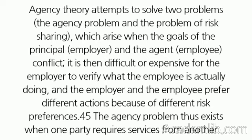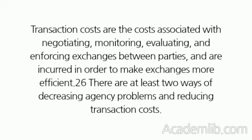Agency theory attempts to solve two problems: the agency problem and the problem of risk sharing, which arise when the goals of the principal (employer) and the agent (employee) conflict. It is then difficult or expensive for the employer to verify what the employee is actually doing, and the employer and the employee prefer different actions because of different risk preferences. The agency problem thus exists when one party requires services from another under conditions of uncertainty and when both parties behave out of self-interest.